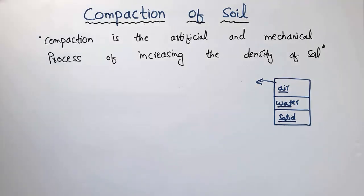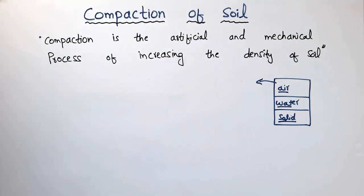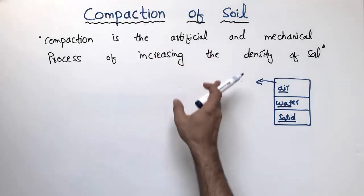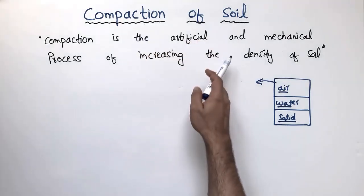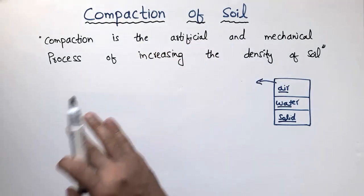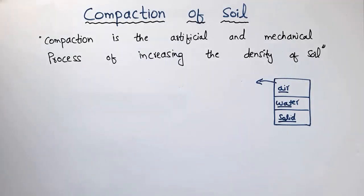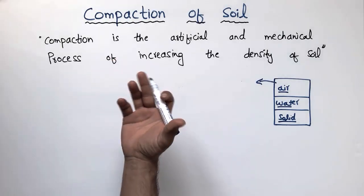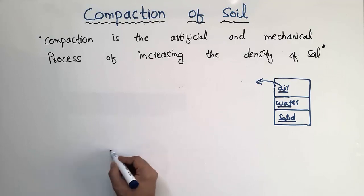In construction, the compaction of soil is a significant part of the building process. Compaction is the first step — we do the compaction of soil before constructing the substructure and superstructure. Compaction of soil is also called the stabilization of soil, where we ensure our soil is stable and can take the load without any settlement. If compaction is performed improperly, settlement can occur and result in the collapse of the whole structure.